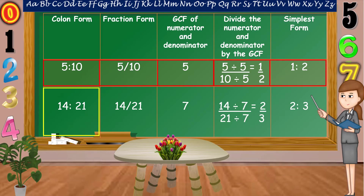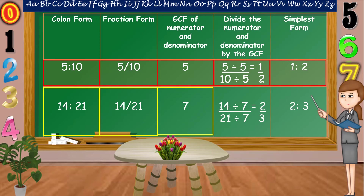Another example: 14 is to 21, or 14/21. The GCF of 14 and 21 is equal to 7. So, let's divide both numerator and denominator by 7. 14 divided by 7 is equal to 2. 21 divided by 7 is equal to 3. Therefore, the simplest form, or lowest term, of 14 is to 21 is 2 is to 3.